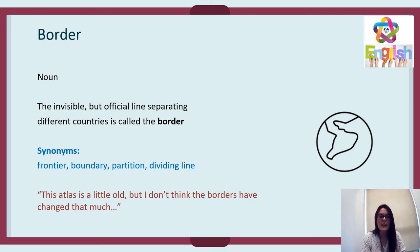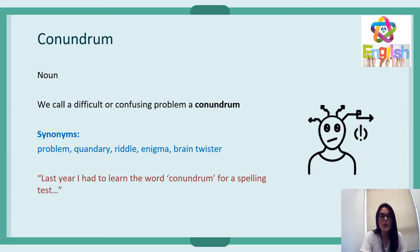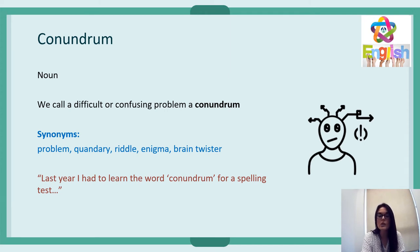The example from the text is: 'This atlas is a little old, but I don't think the borders have changed that much.' Next: 'conundrum' — a really good word. When you've got a confusing or difficult problem, you call it a conundrum. Synonyms are problem, quandary, riddle, enigma, brain twister. If you've got a particularly difficult situation you're not sure what to do about, you might have a bit of a conundrum.